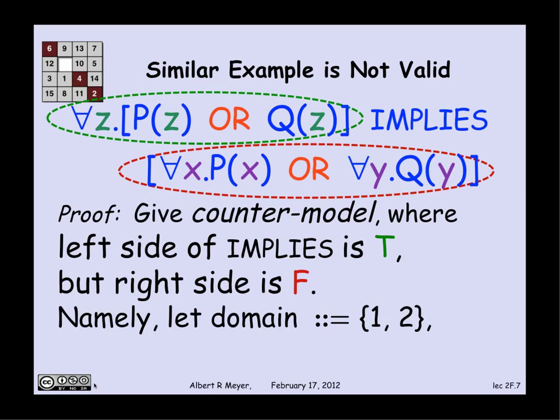So I need to make the left-hand side true and the right-hand side false. Well, I'm going to choose the domain of discourse to be the simplest one that will make this false. Namely, let's let the domain of discourse just be the numbers one and two. And let Q of Z be the predicate that says Z is one. And P of Z be the predicate that says Z is two.